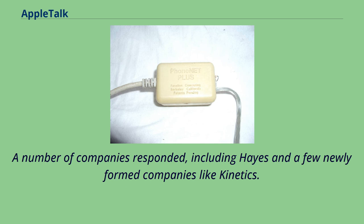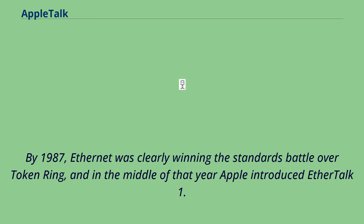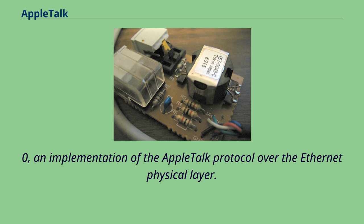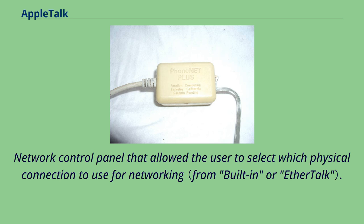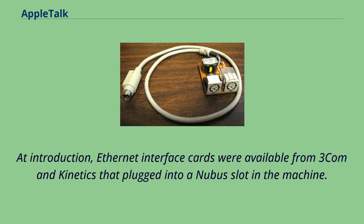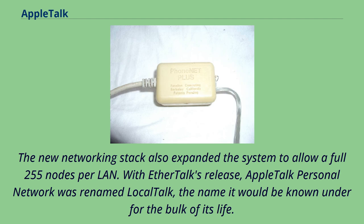By 1987, Ethernet was clearly winning the standards battle over Token Ring, and in the middle of that year Apple introduced EtherTalk 1.0, an implementation of the AppleTalk protocol over the Ethernet physical layer. Introduced for the newly released Macintosh II — Apple's first Macintosh with expansion slots — the operating system included a new network control panel allowing the user to select which physical connection to use. Ethernet interface cards were available from 3Com and Kinetics. With EtherTalk's release, AppleTalk Personal Network was renamed LocalTalk.